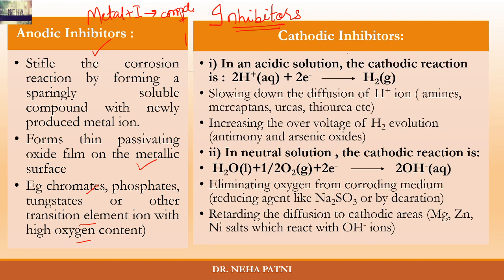The second method is cathodic inhibitors. What you do here is inhibit the reaction occurring at the cathode. There are two basic reactions happening at the cathode: if it is an acidic solution, there is evolution of hydrogen; and if it is a neutral solution, there is addition of oxygen. These are the two reactions by which the cathodic reaction happens.